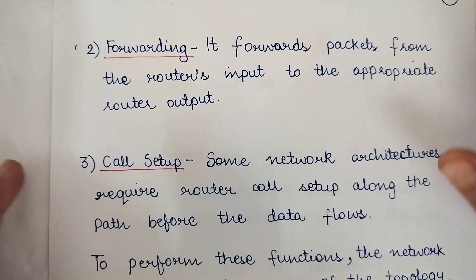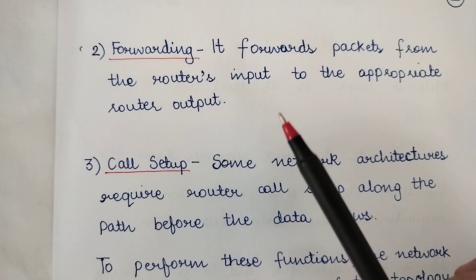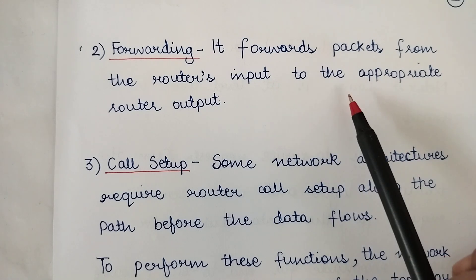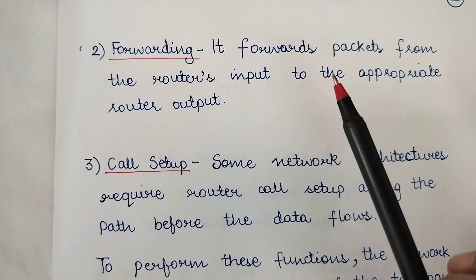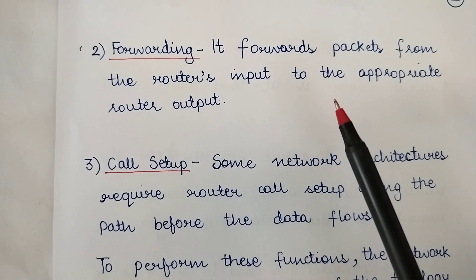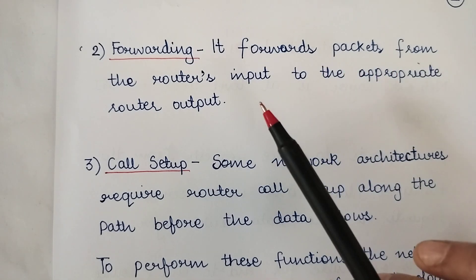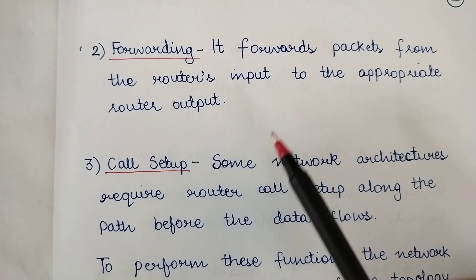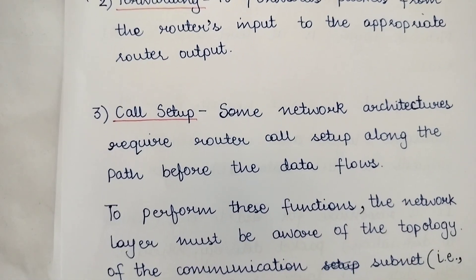The second function is forwarding. The network layer forwards packets from the router's input to the appropriate router's output. Whatever packets have to be forwarded are forwarded via the routers. So the responsibility of forwarding also lies with the network layer.